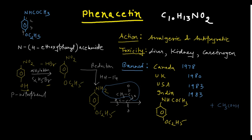To name the intermediates: the second intermediate (after reduction) is 4-ethoxybenzeneamine, since it is a derivative of amine (NH2). The first intermediate (after alkylation) is 1-ethoxy-4-nitrobenzene — numbering the ring, position 1 carries the ethoxy group and position 4 carries the nitro group.